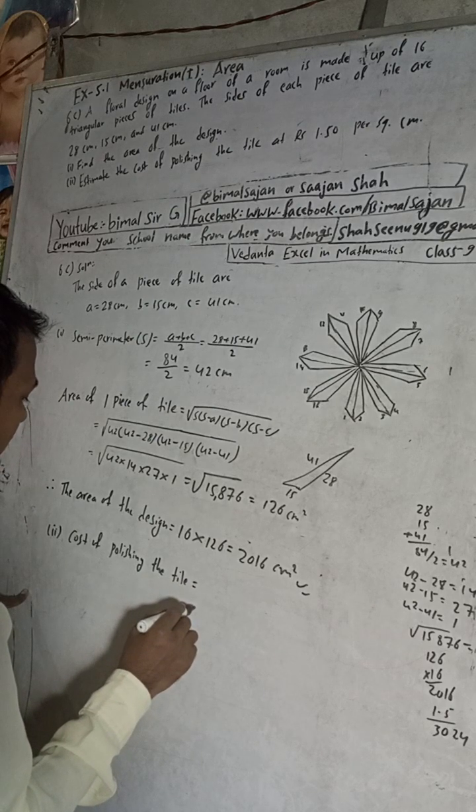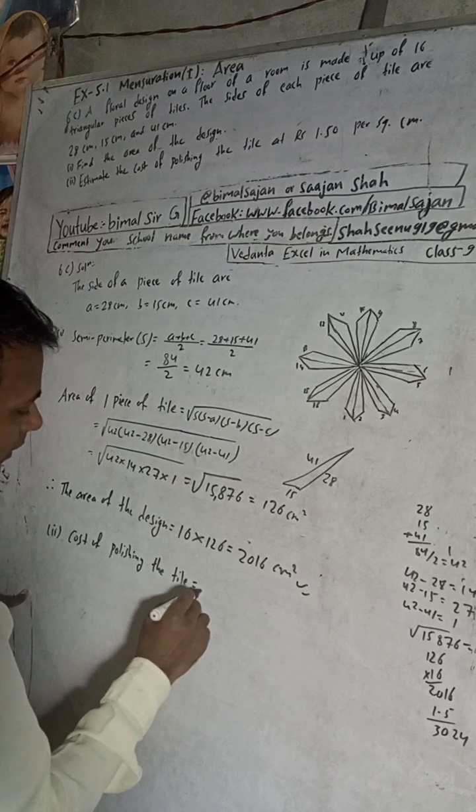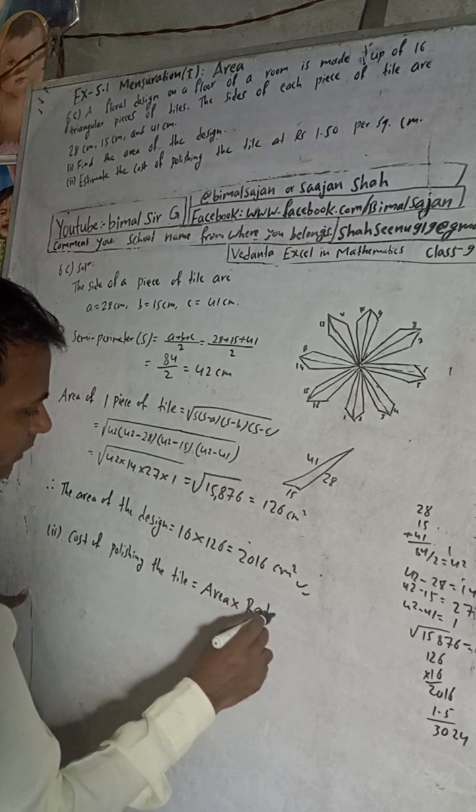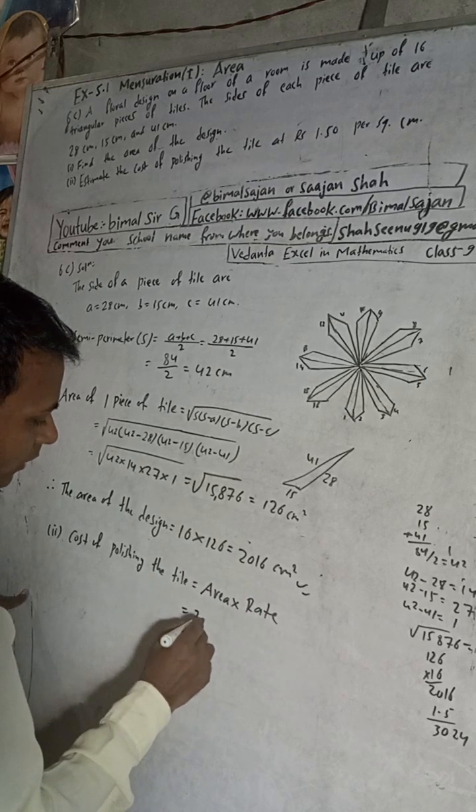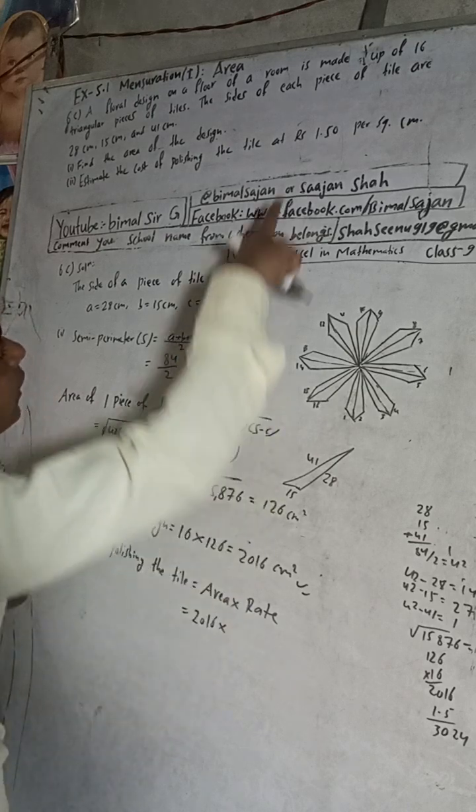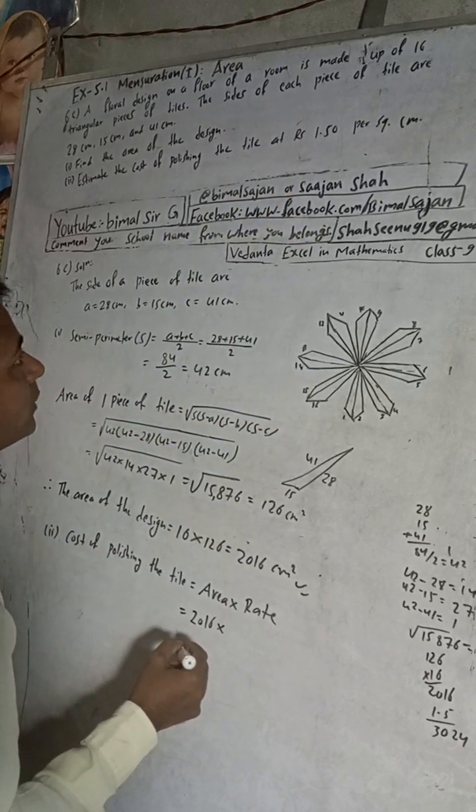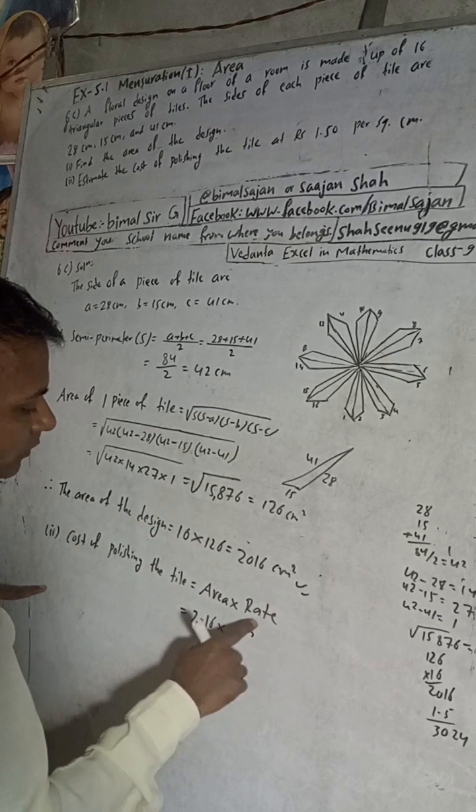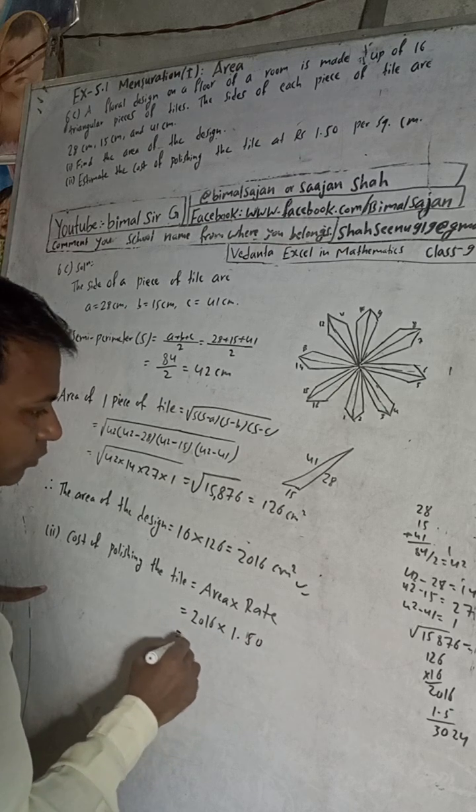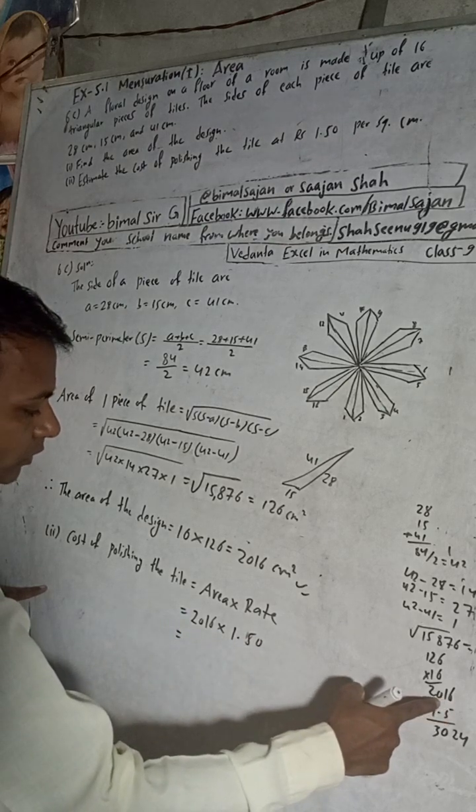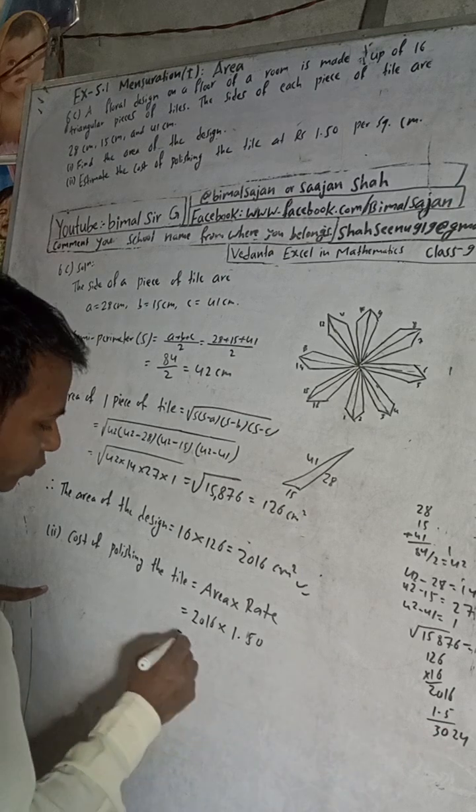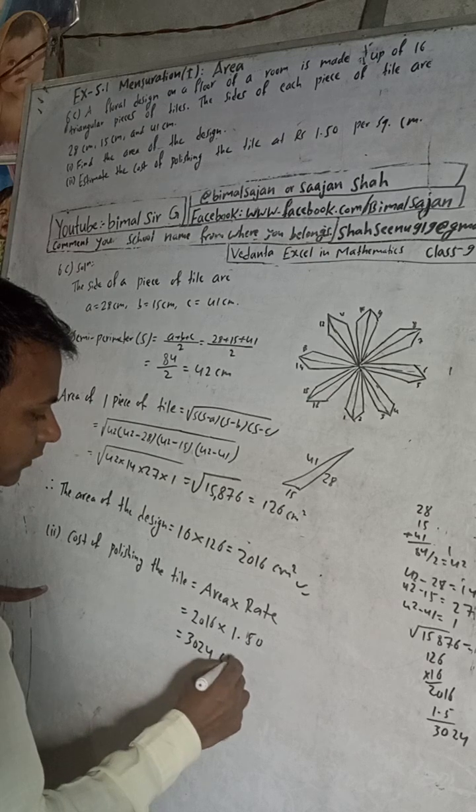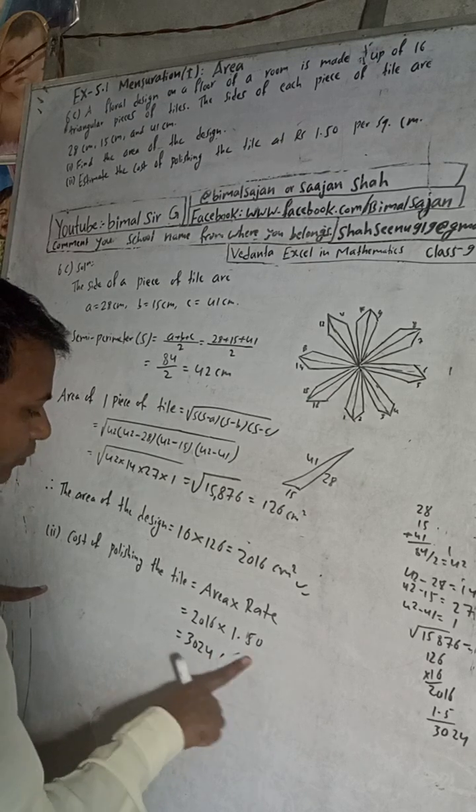Area, area into it, simple formula. So what is total area? 2016 and into rate is how much, 1 rupee 1.50, that means 1 rupee 50 paisa for per square cm. So into 1.50. When we multiply this, we'll get here 2016 into 1.5, we'll get here 3,024, and this is our rupees.